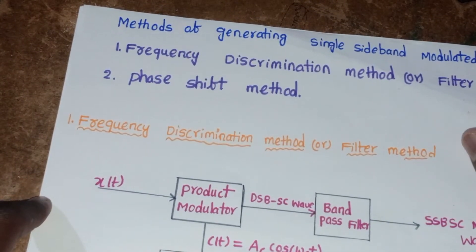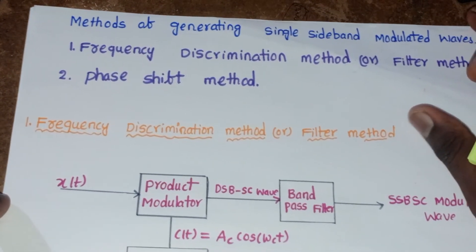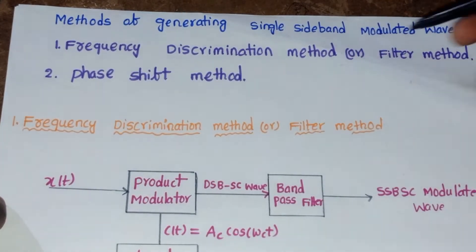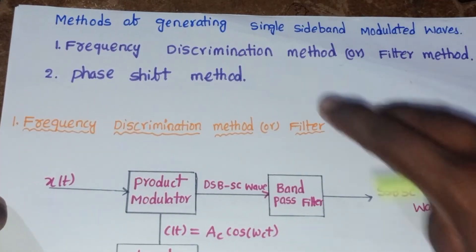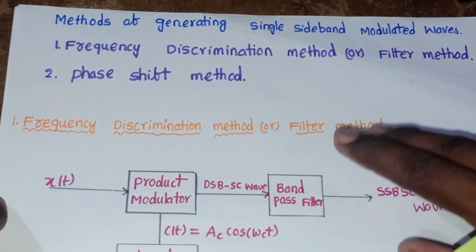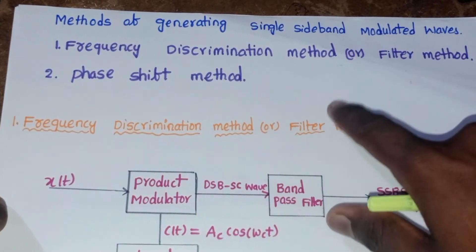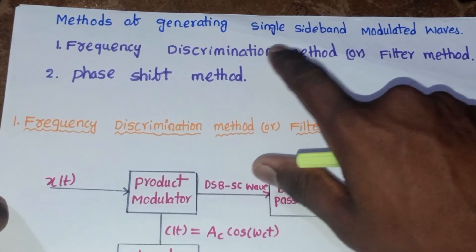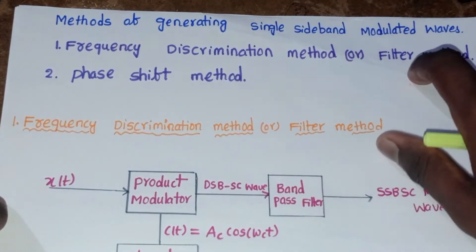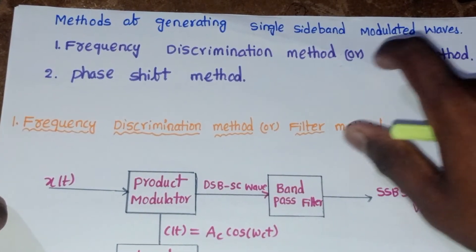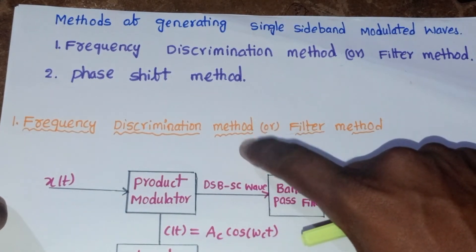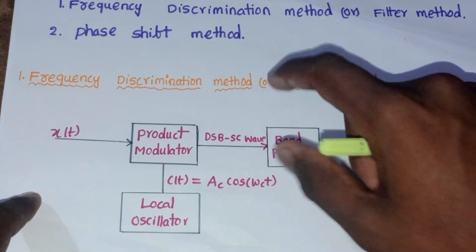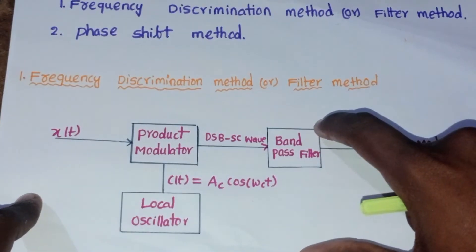Now let's see the methods for generating the SSB-SC modulated wave. There are two methods: the first is the Frequency Discrimination Method (also known as the Filter Method), and the second is the Phase Shift Method. Let's see the Frequency Discrimination Method with the help of a block diagram.